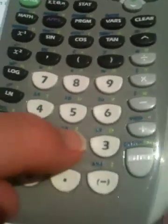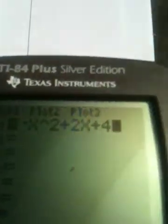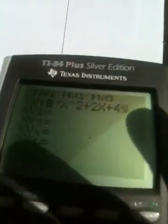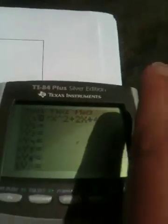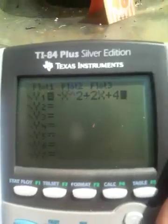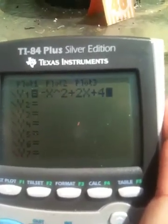Then the rest that we type in is pretty easy. We type a plus 2X, right? And then what's left? A plus 4. So look what we've typed in. We've typed in the opposite of. Let me make sure you can see that. The opposite of X caret 2 plus 2X plus 4.